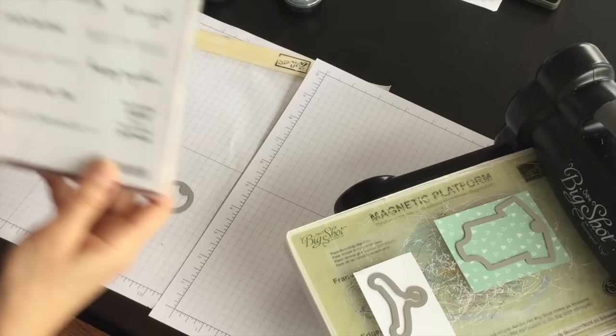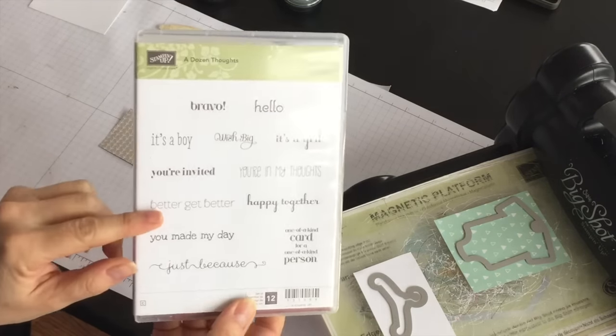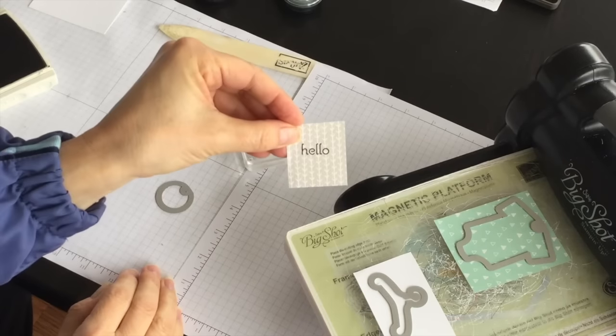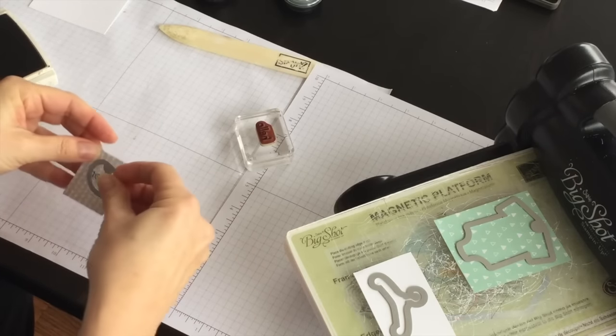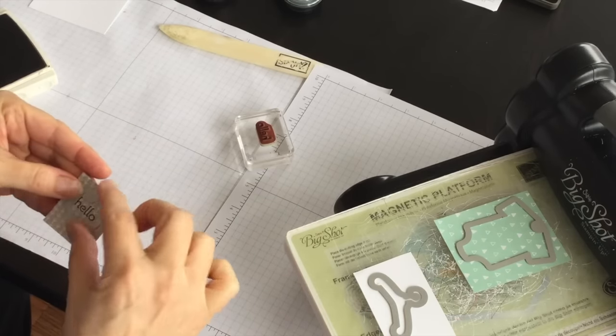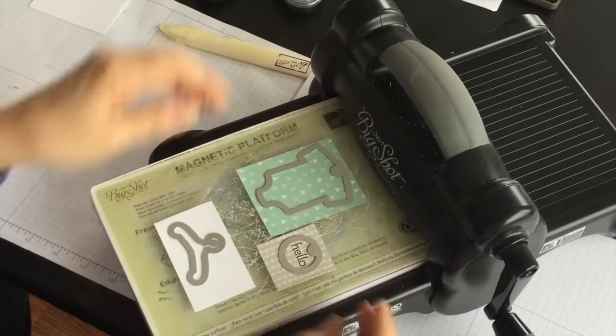So let's take a stamp from the A Dozen Thoughts stamp set. It's the one that says hello and I'm going to ink it up using basic black and I'm going to stamp it down on the paper like so. Hopefully you can see that all right, and now I'm going to put the onesie around it and then die cut that out.